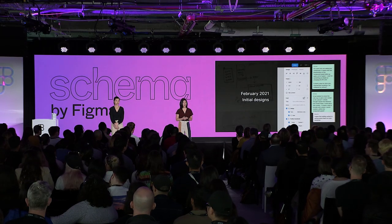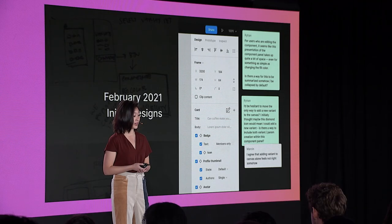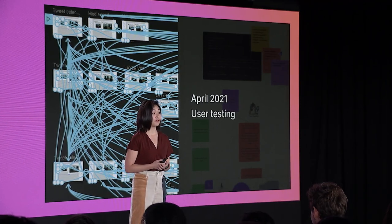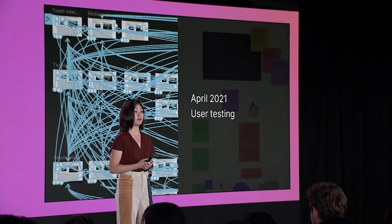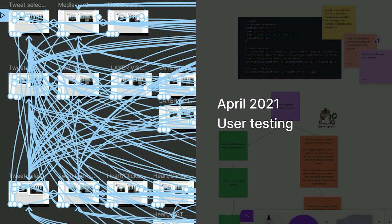In February 2021, our designer Shana created initial designs for the feature and brought them to Design Crit, getting feedback from various designers at Figma. In April 2021, we continued gathering feedback by taking designs to user testing. Internally we also have a lot of noodles in our prototyping designs — and we actually have an internal Slack channel where we collect pasta pictures. This was really helpful for validating decisions around what kinds of flows we wanted to create.